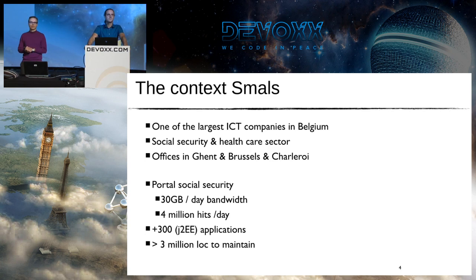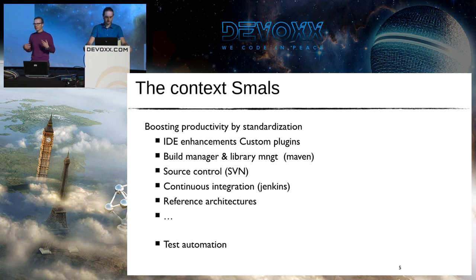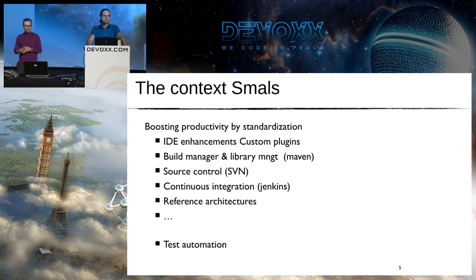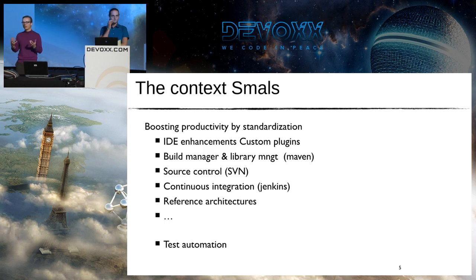That amounts to around 3 million lines of code to maintain. A colleague gave a presentation two years ago on how we became effective at producing applications. We did a lot of standardization — created Eclipse plugins to boost developer performance, introduced Maven as build manager, used Subversion for source control, set up one big continuous integration server, and established reference architectures. Today we're talking about test automation and how it boosts developer performance.